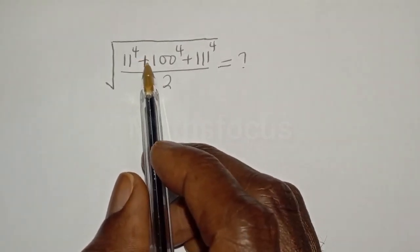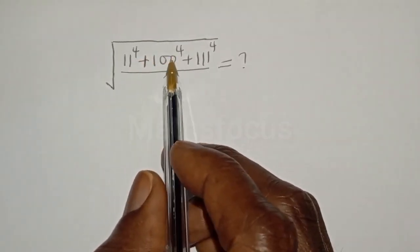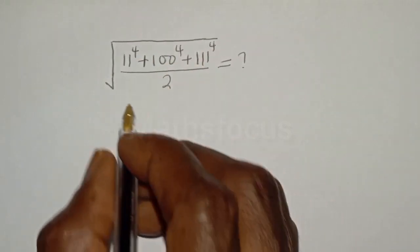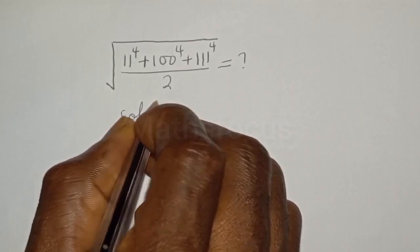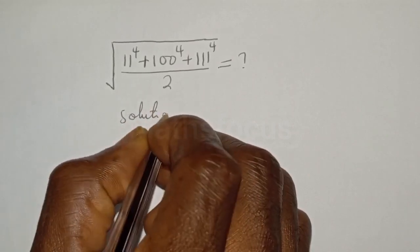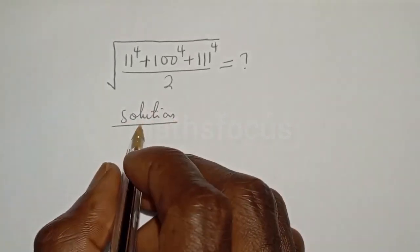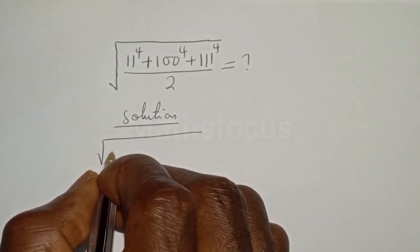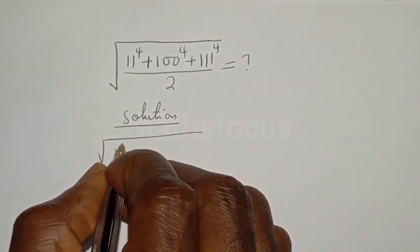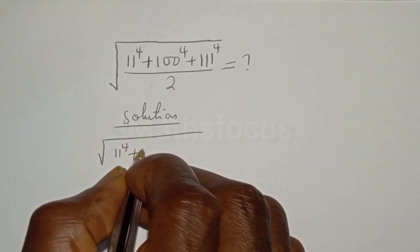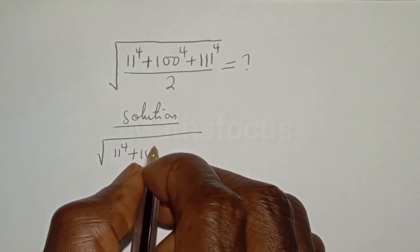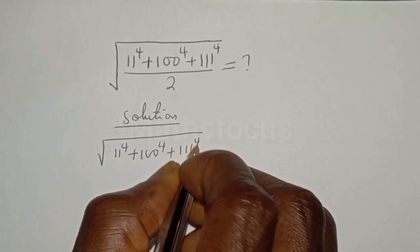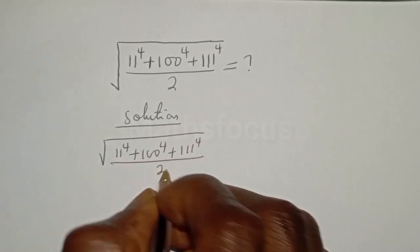We have the square root of 11 raised to power 4, plus 100 raised to power 4, plus 111 raised to power 4, all divided by 2. What is the solution?